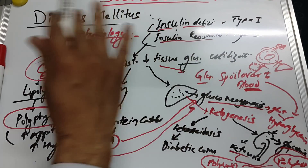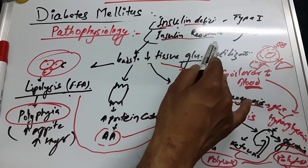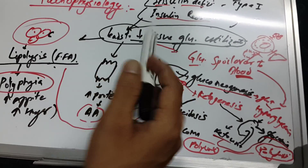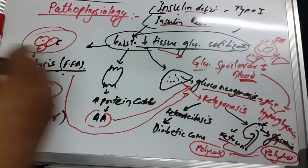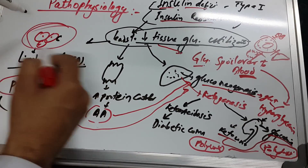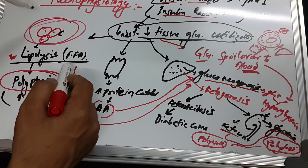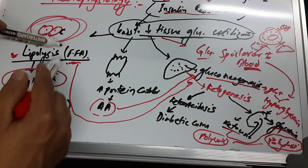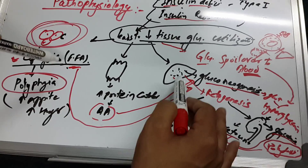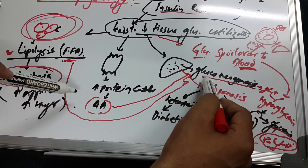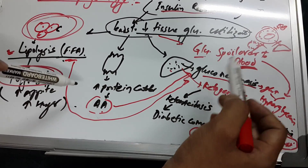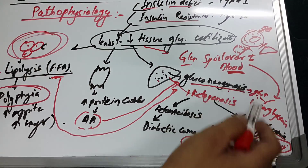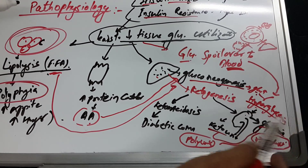In summary: insulin deficiency in type 1 means no insulin formation, and in type 2 there is insulin resistance. Due to that, glucose utilization by tissues decreases — no glucose uptake by tissue. In adipose tissue or fat cells, lipolysis occurs, releasing free fatty acids, causing polyphagia — more appetite and hunger. These free fatty acids go to the liver, where gluconeogenesis occurs — the formation of glucose from non-carbohydrate sources — so more glucose is released.